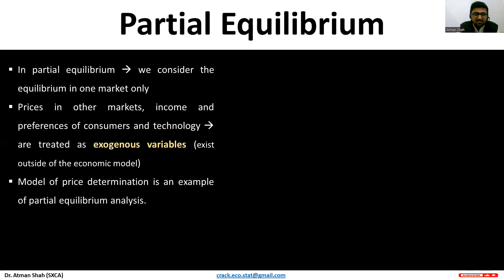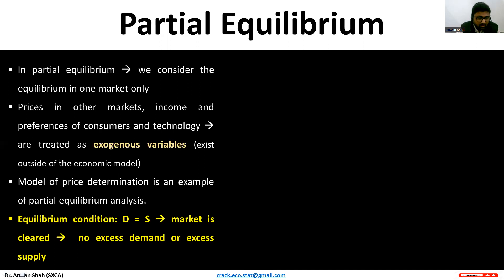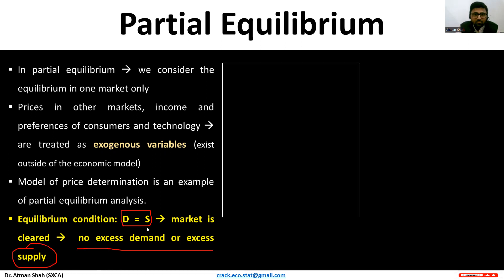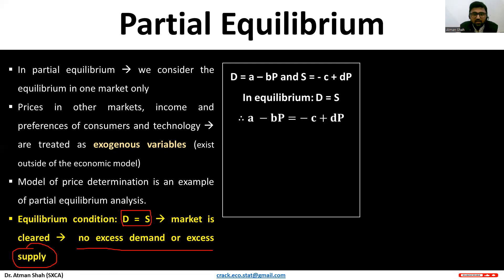The model of price determination is an example of partial equilibrium analysis. The equilibrium condition is that demand and supply are equal. When demand and supply are equal, the market is cleared — there is no excess demand and no excess supply. We have the demand equation D = a − bp and the supply equation S = −c + dp, and in equilibrium these two are equal: a − bp = −c + dp.